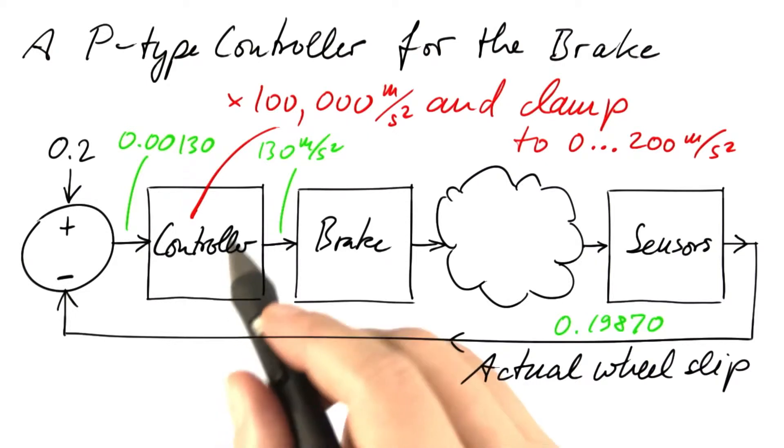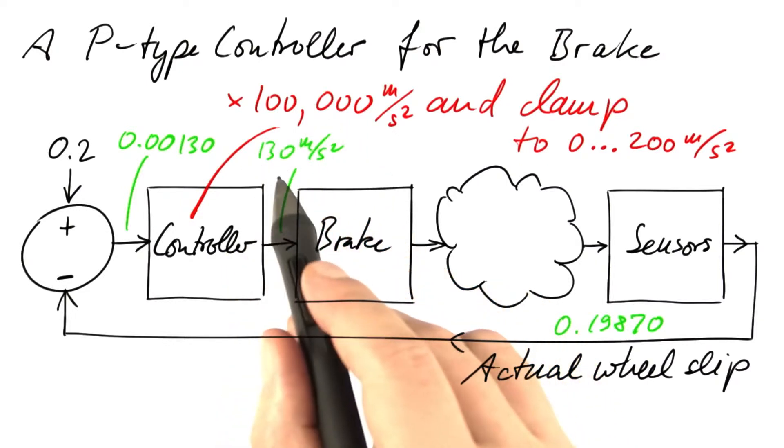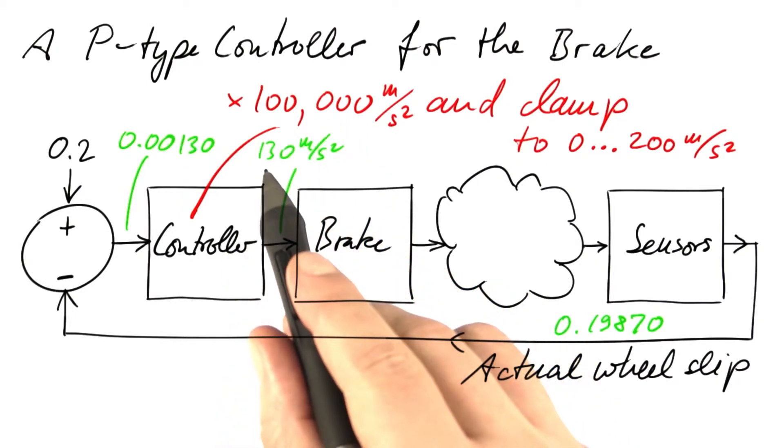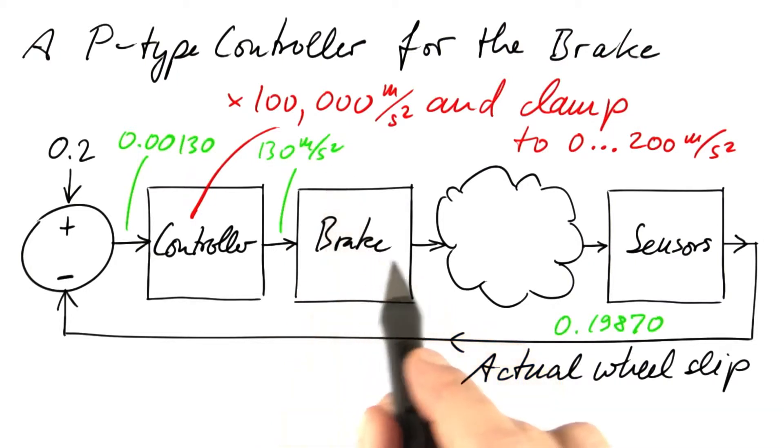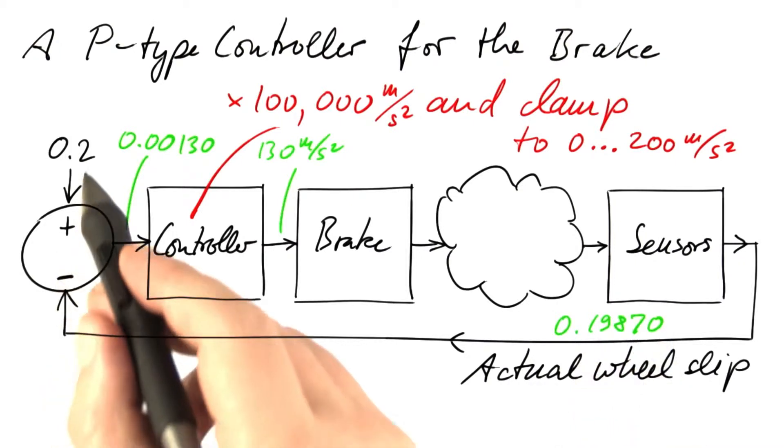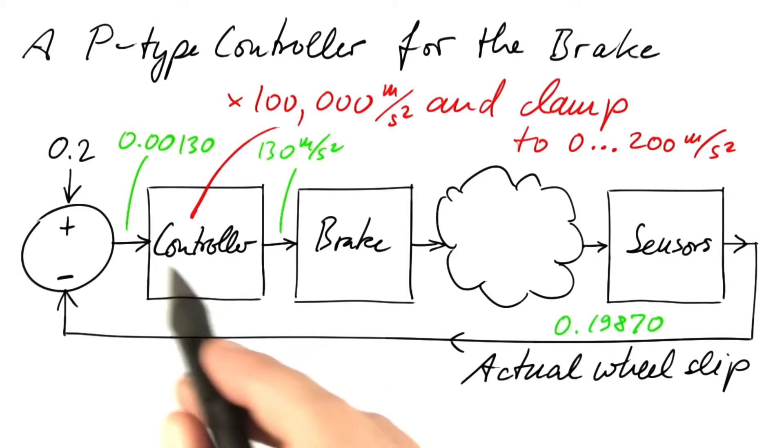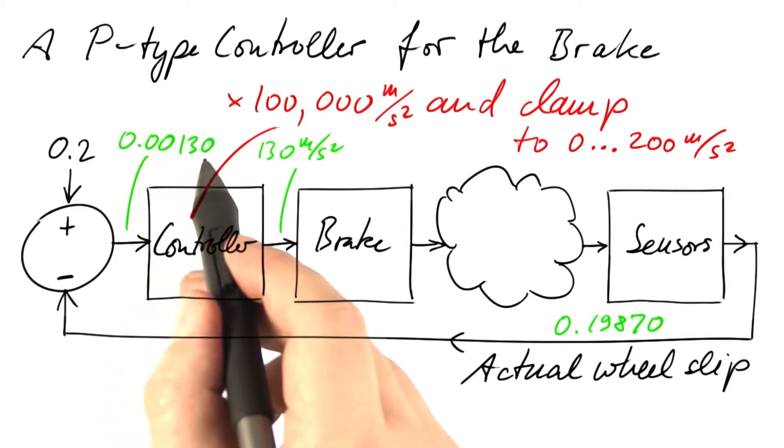Why could that possibly work? Assume that when we feed this control value of 130 meters per second squared into the brake, we actually end up with a wheel slip of 0.1987. Then the difference between the optimum value and the actual value is 0.0013.